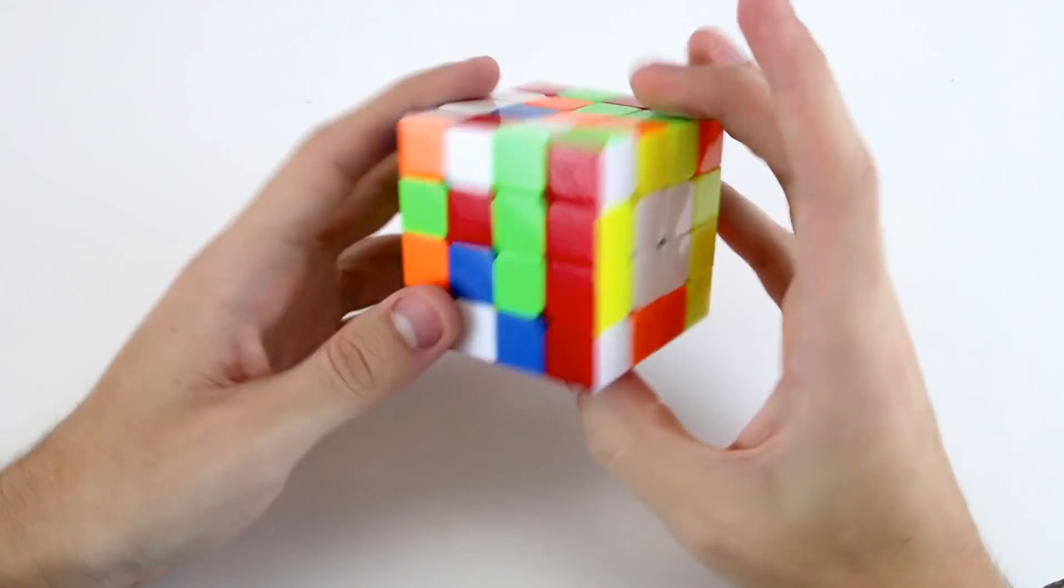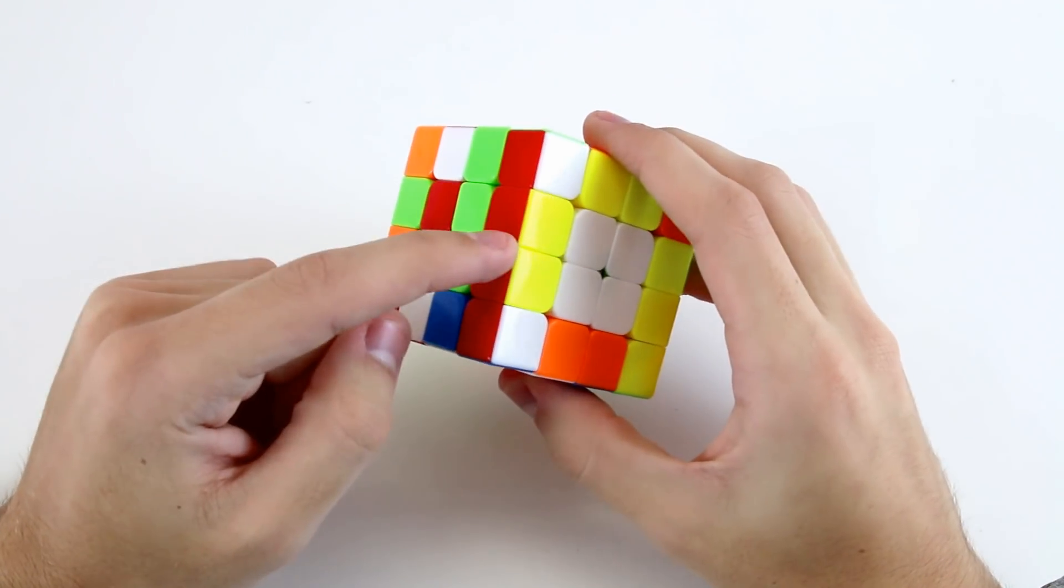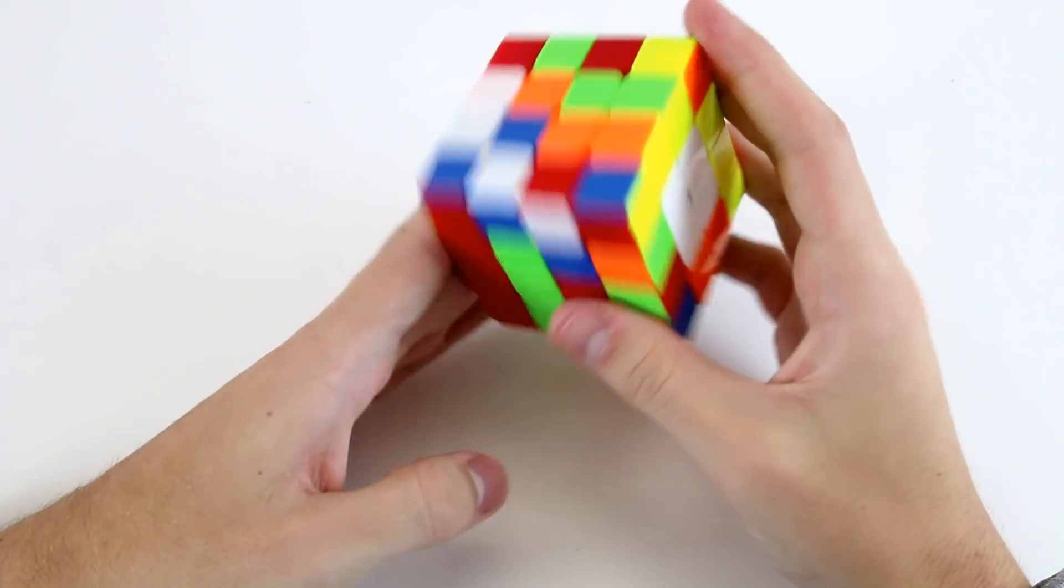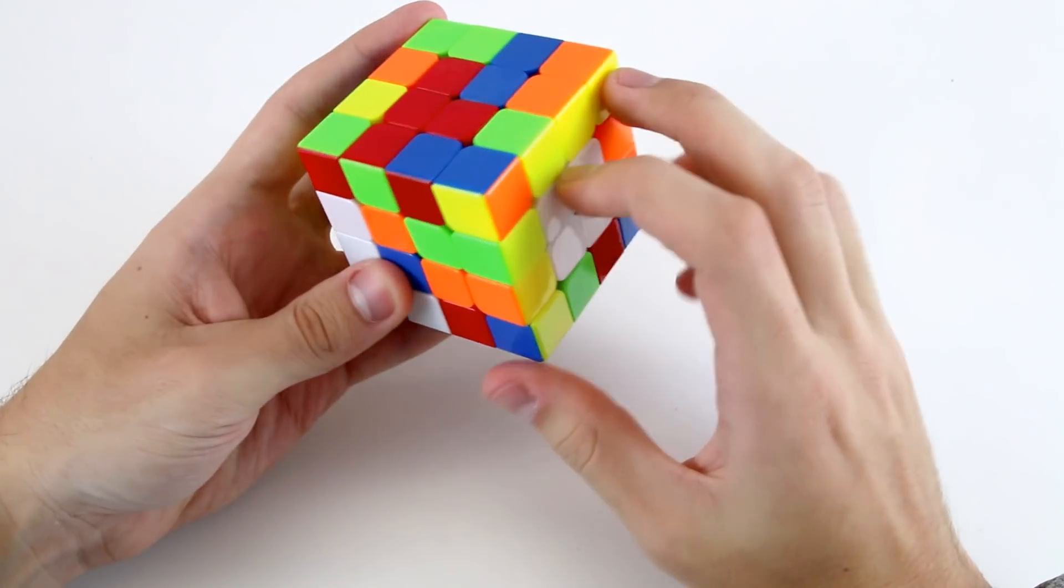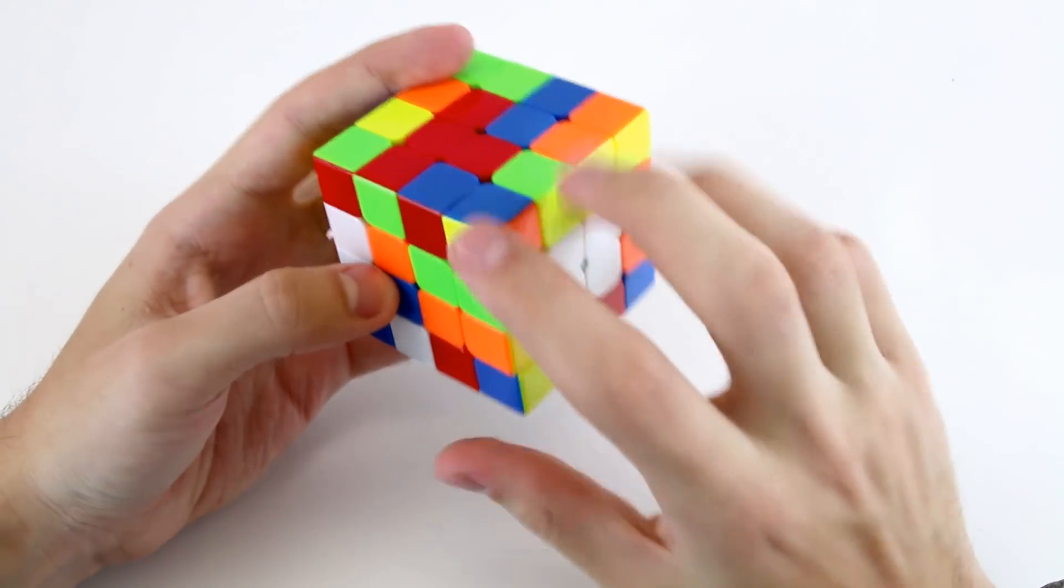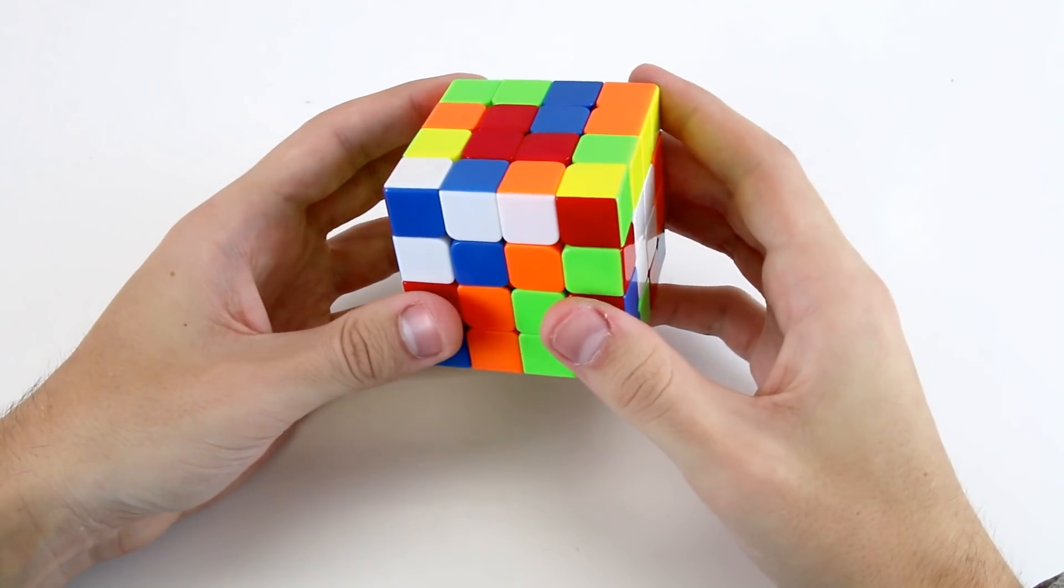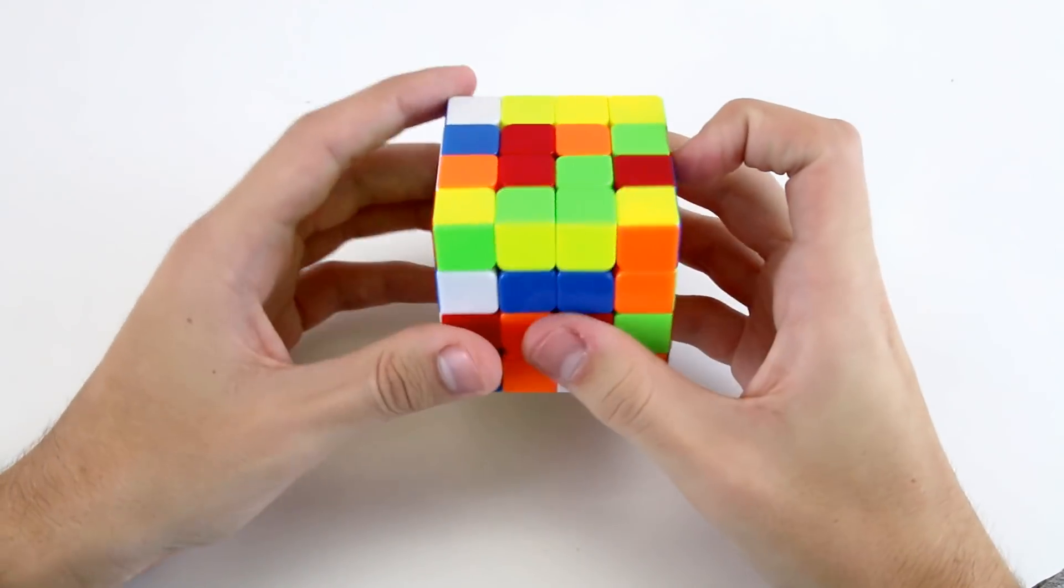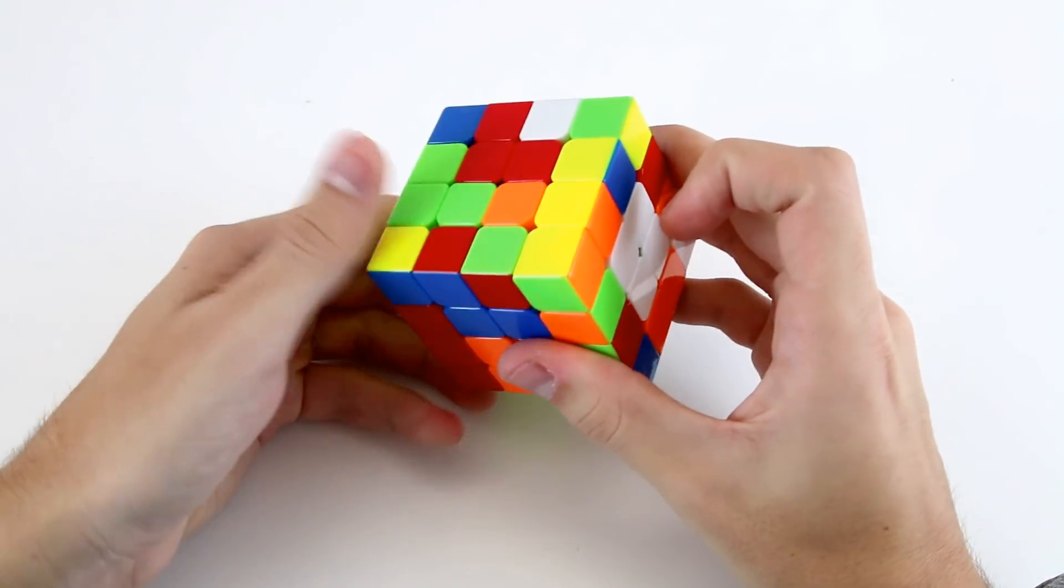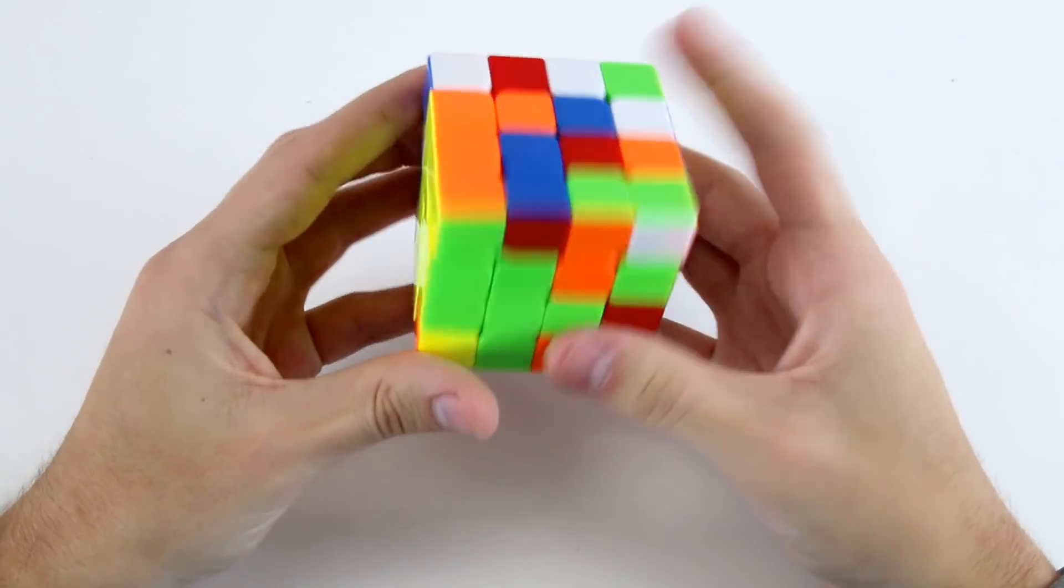Actually when I was doing that first white center I noticed this red and yellow edge so I can immediately insert that into our cross layer like so. Now I have a couple of different options for the next edge. I'd probably do the yellow and green ones next so f u r like that and then do the yellow and orange like so.